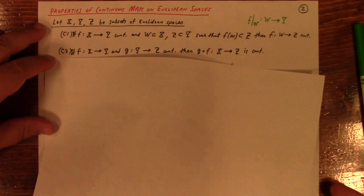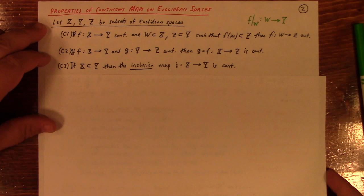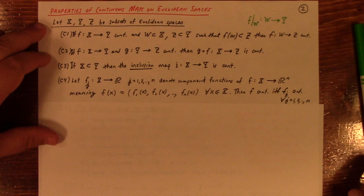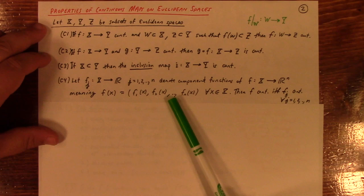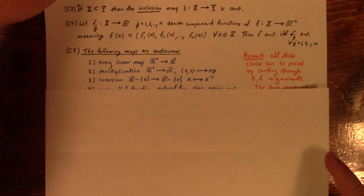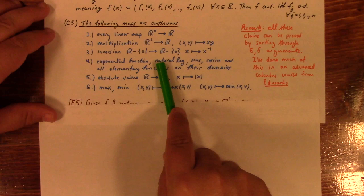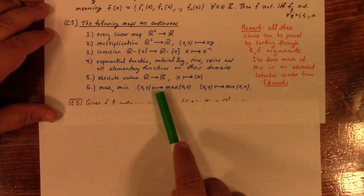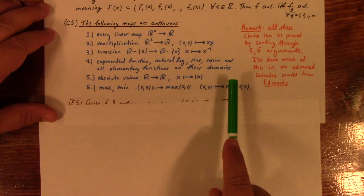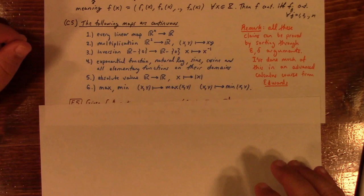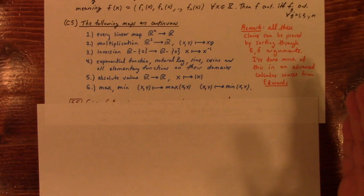So the next one here says the composite of continuous functions is continuous, the inclusion map is continuous. If you've got a function from X to R^N, then it's continuous if and only if its component functions are continuous. You can say more than that: every linear map is continuous, the multiplication map from R^2 to R is continuous, the inversion map is continuous, exponential, natural log, sine, cosine, all your favorite elementary functions are continuous on their domains, absolute value, the max min functions, these are all continuous. These claims can all be established with the usual methods of analysis, in terms of distances, and epsilons and deltas and such.